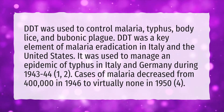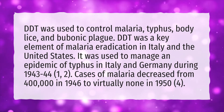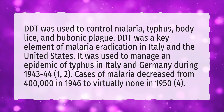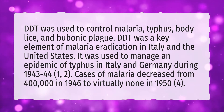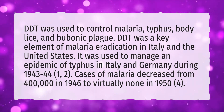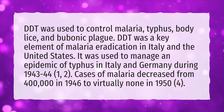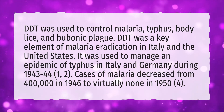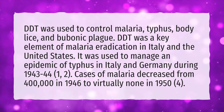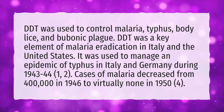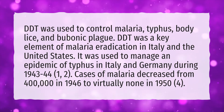DDT was a key element of malaria eradication in Italy and the United States. It was used to manage an epidemic of typhus in Italy and Germany during 1943-44. Cases of malaria decreased from 400,000 in 1946 to virtually none in 1950.